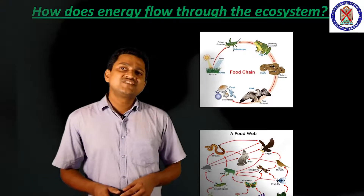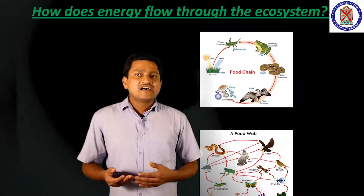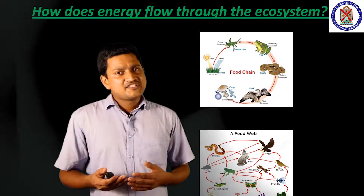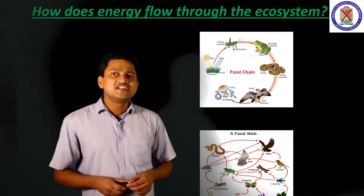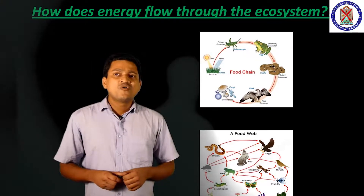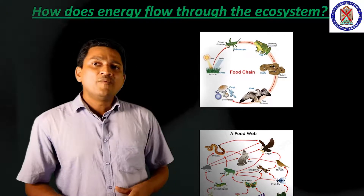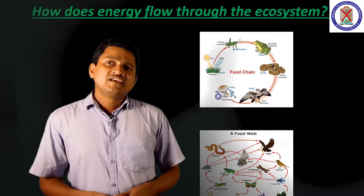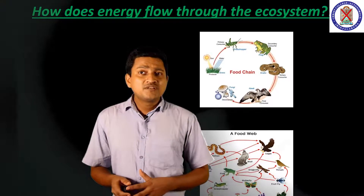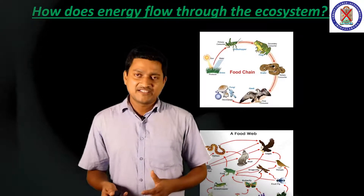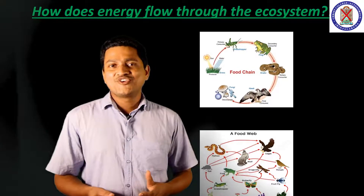Herbivores are consumers that eat plants. Carnivores are consumers that only eat other animals. And omnivores are consumers that eat both plants and animals. An example of an omnivore is human beings.